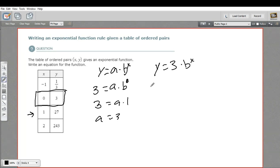So this is y is 27, and 3 times b to the first power. So to solve for b here, I would just divide both sides by 3, and I'd get 9 equals b to the first power. And b to the first power is just b. So b equals 9.